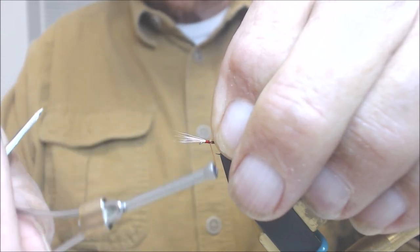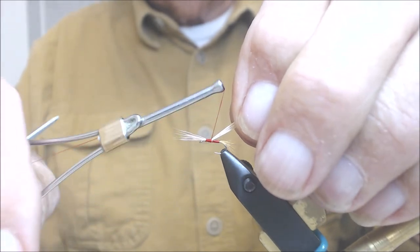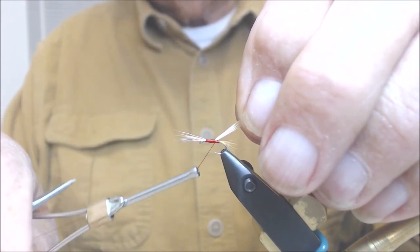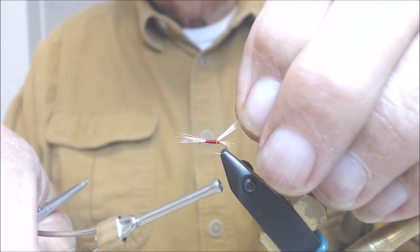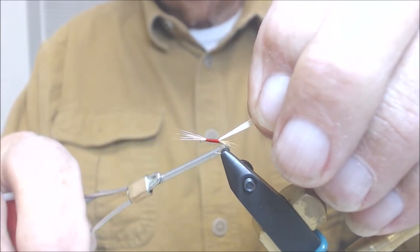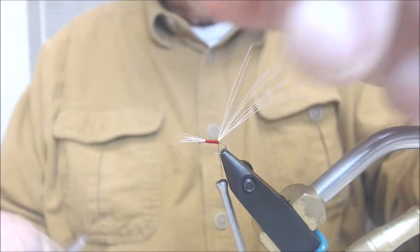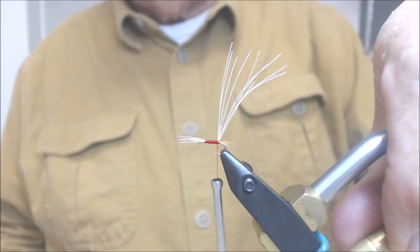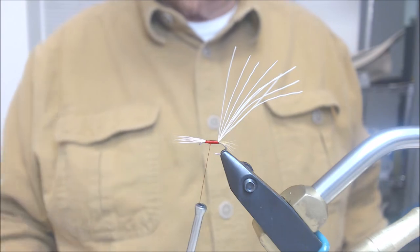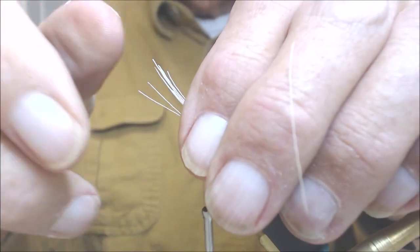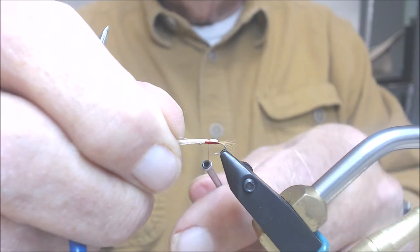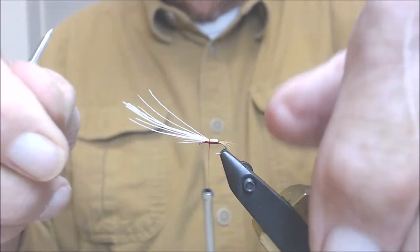And then as I go down the shank, I'm going to start tightening up those wraps, make them a little bit tighter. I don't want to make them too tight though, because I'll cut the hackle on the deer hair if I make them too tight. I've got it down to the end. Now I can bring my thread back to that starting point, which is about a third of the way down the shank. Take our fibers, pull them over the top of the shank, and make a wrap over them.